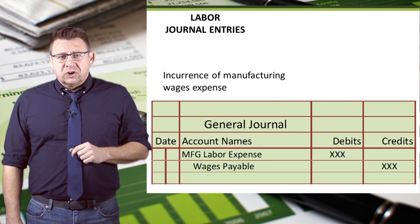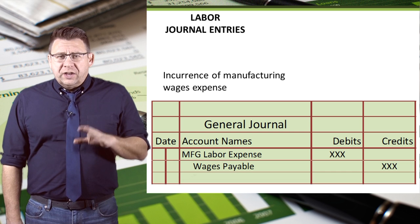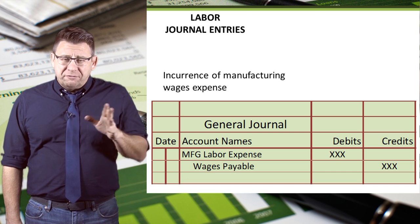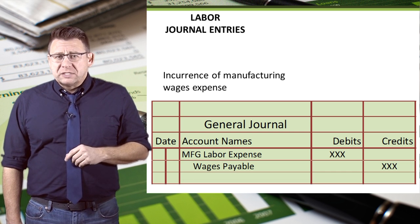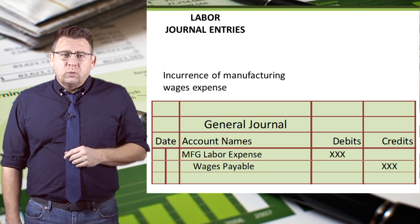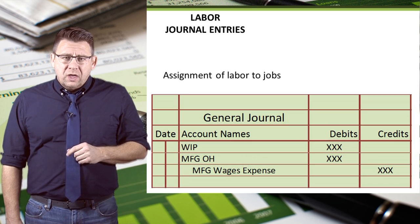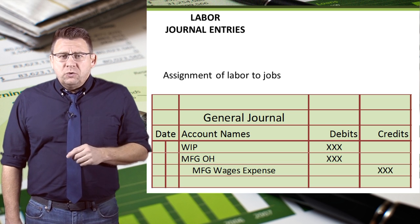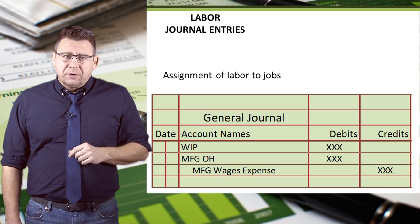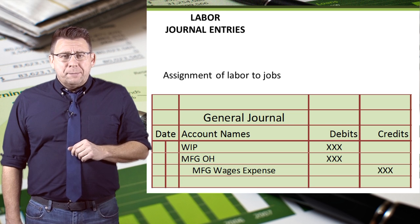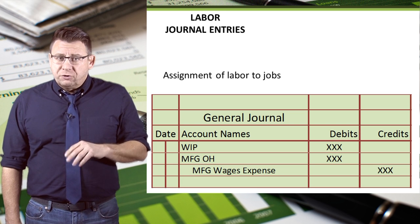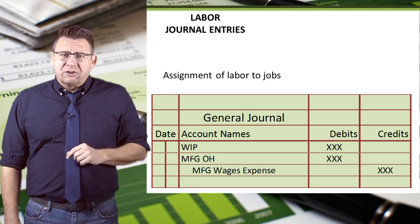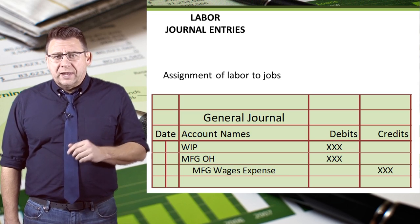Finally, let's look at the journal entries for labor. The incurrence of manufacturing labor is a debit to manufacturing labor expense and a credit to wages payable. Then the dollars are moved to production: a debit to WIP for the direct labor, a debit to manufacturing overhead for any indirect labor, and a credit to manufacturing wage expense for the balance.